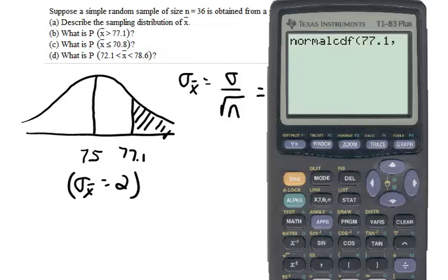comma, right bound, which goes out to infinity, right? So it's the 1, and then we press 2nd, EE, 99, go out to infinity, comma, mean, which is 75, comma, standard deviation, which is 2.